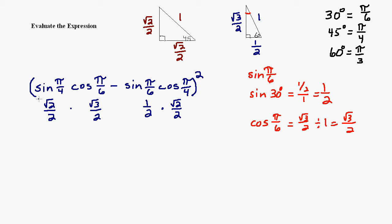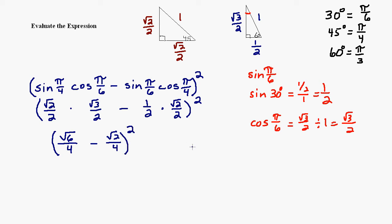Now we have all our numbers. It's just a matter of arithmetic and order of operations. We do what's in the parentheses first — multiplication before the subtraction. When multiplying fractions, we multiply the numerators and the denominators. Square root 2 times square root 3 is square root 6, and 2 times 2 is 4. For the other term, 1 times square root of 2 is square root of 2, and 2 times 2 is 4. We can simplify what's inside the parentheses using the common denominator, writing it as square root 6 minus square root 2, all over 4, and then we still need to square this quantity.